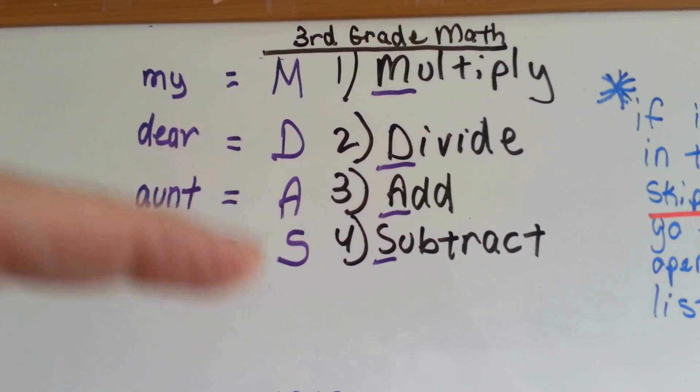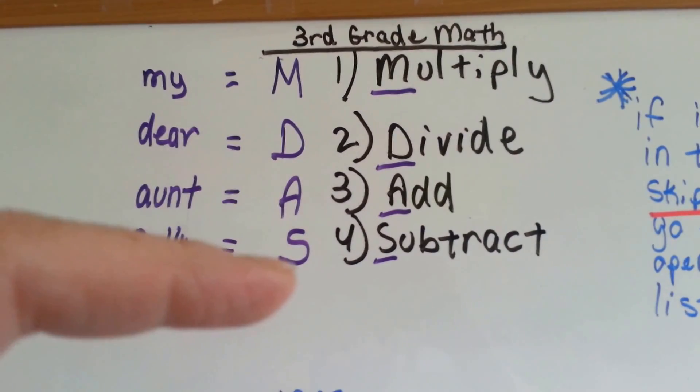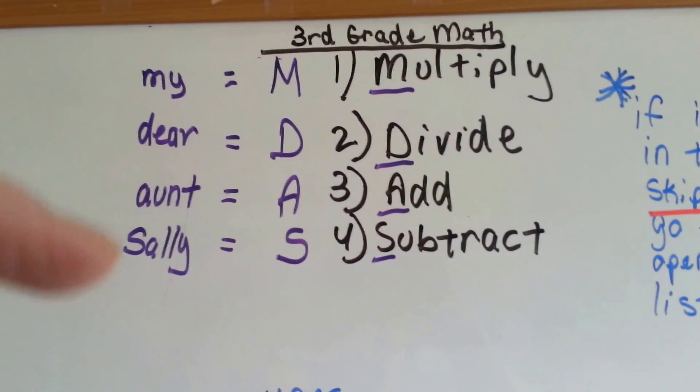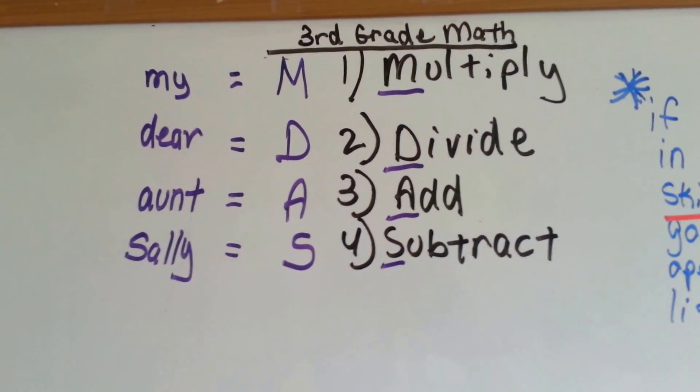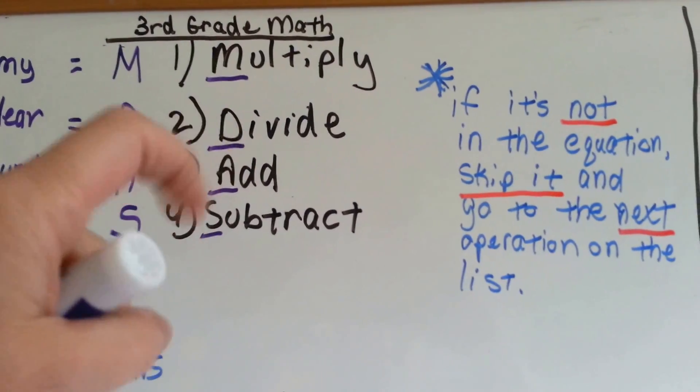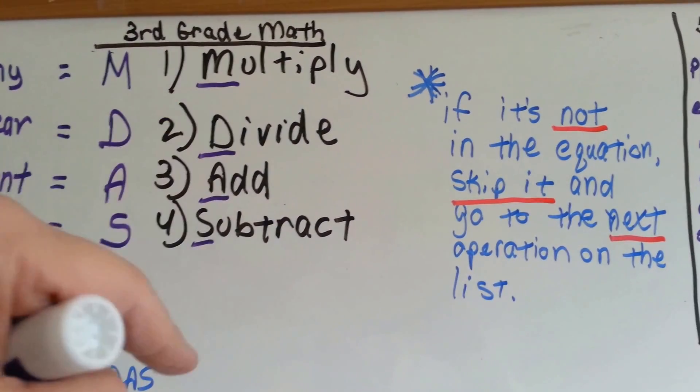Now, some people, in order to remember the MDAS, say 'my dear Aunt Sally.' And then the M, the D, the A, and the S are there to help them remember. And if it's not in the equation, you skip it and go to the next operation on the list.